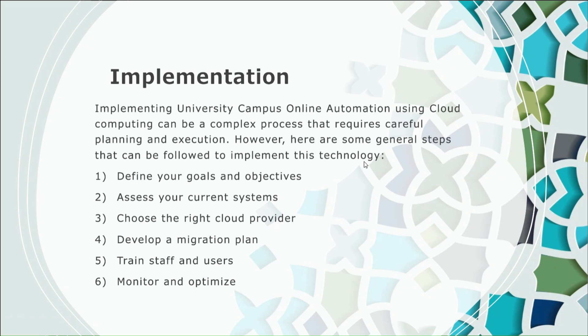Implementation. Implementing University Campus Online Automation using cloud computing can be a complex process that requires careful planning and execution. Here are some general steps that can be followed to implement this technology. First, define your goals and objectives. Before implementing any cloud-based system, it is important to define your goals and objectives for automation. This will help you determine which systems need to be migrated to the cloud and which need to be replaced.